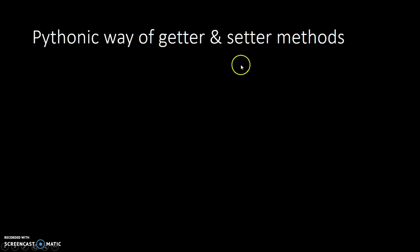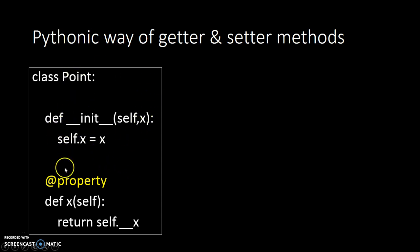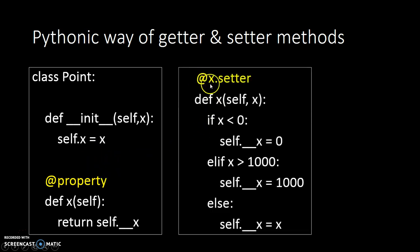Now, the Pythonic way of Getter and Setter methods. In the Pythonic way, we have a class Point where we declare one variable X. We use the property decorator — you have to use the at-sign symbol in front of 'property'. This at-sign represents the decorator, so we are using the property decorator. Then we have a method named X. The @property decorator is used to return the value of X, and to set the value of X we use the property name dot setter, like @X.setter. The remaining logic is the same.